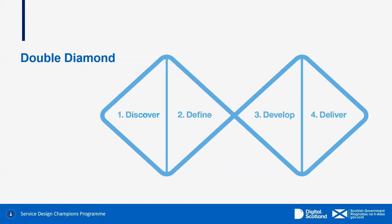The fourth part of the double diamond is called deliver. By going through process steps one to three, you'll really understand what you need in order to deliver your product — what needs to be in place, what features you need to create, and how to deliver it. It's really important to move through the full diamond, especially points one to three, because most organisations start in the second diamond — with develop and deliver — and really miss out points one and two.